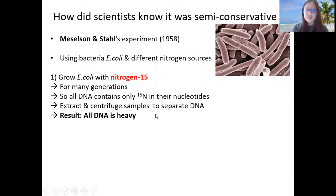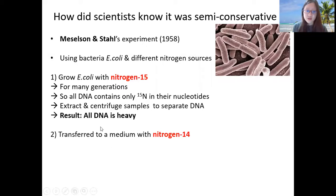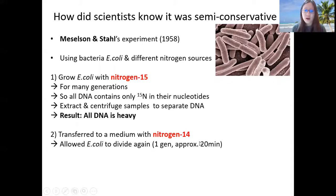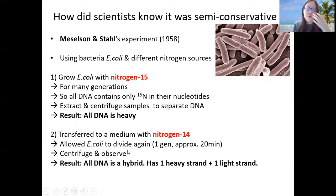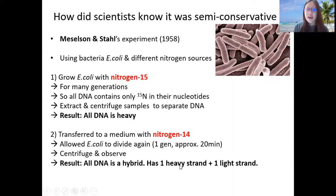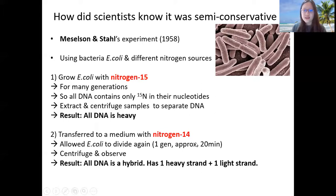After they make sure that all the DNA in the E. coli is heavy, they actually transfer the E. coli into a medium with nitrogen-14, which is a lighter nitrogen source. They let the E. coli divide again for one generation. What happens is that the newly synthesized nucleotides will have nitrogen-14 instead of nitrogen-15. Then they centrifuge — spinning really, really quickly — to separate the DNA. The result is that all DNA is a hybrid with one heavy strand and one light strand: the heavy strand made of 15N and the light strand made of 14N.